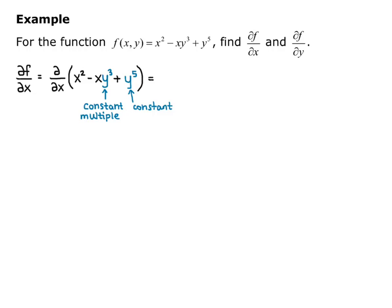So the partial derivative equals 2x — the derivative of x² — minus 1 times y³, because the constant multiple y³ gets multiplied by the derivative of −x, plus zero. This simplifies to 2x − y³. So this is partial f partial x, or f sub x.